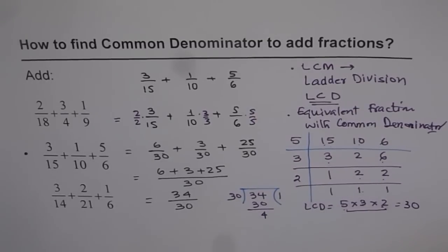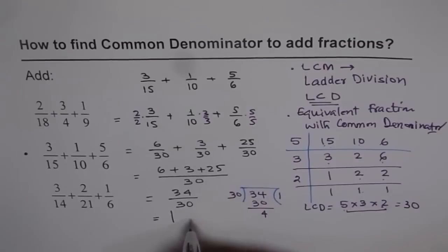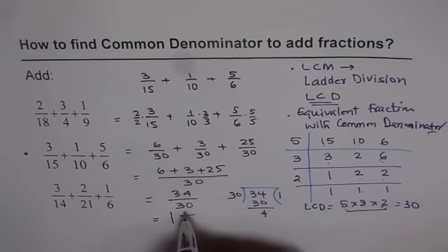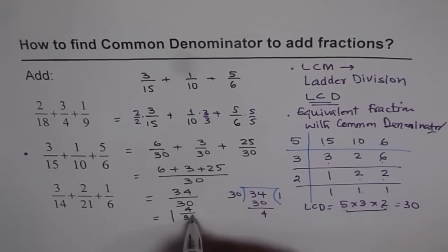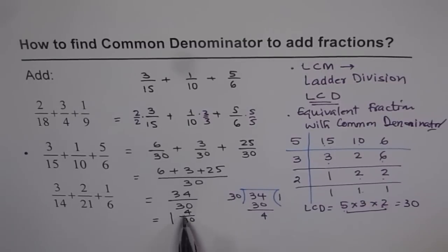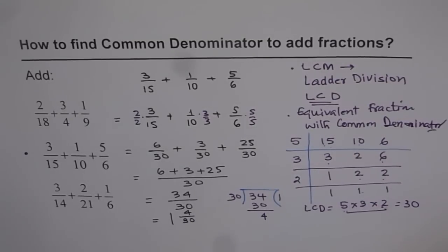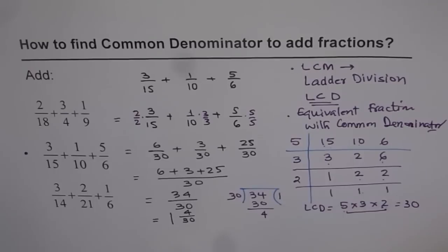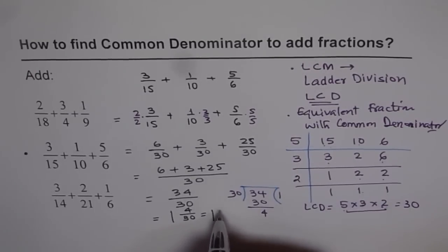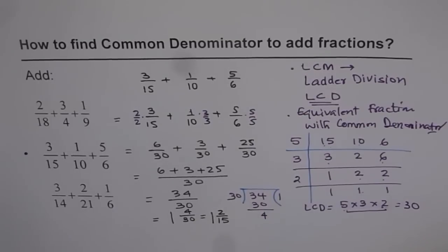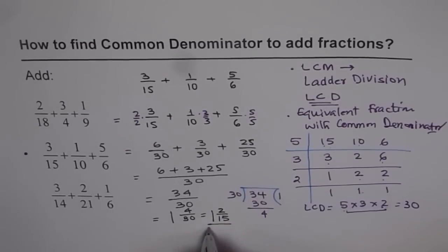So therefore, I could write this as 1 whole 4 over 30. 4 over 30. Now still, 4 over 30 can be simplified. You can divide both by 2. And therefore, we can write this as 1, 2 over 15. So that should be our answer. 1, 2 over 15.